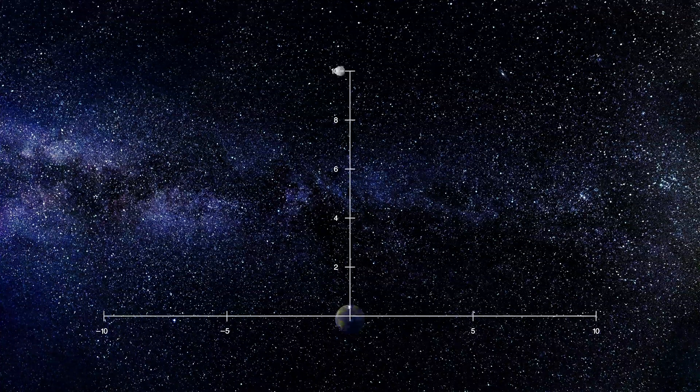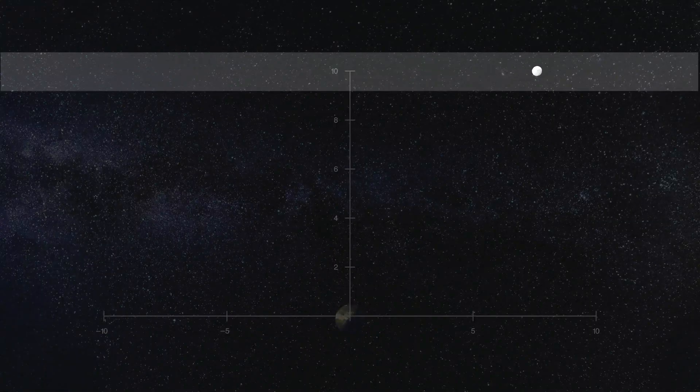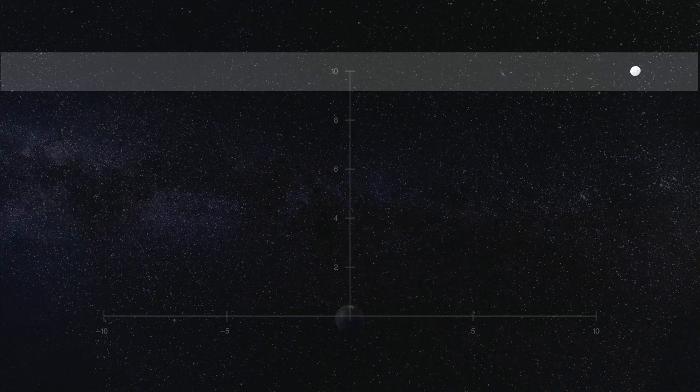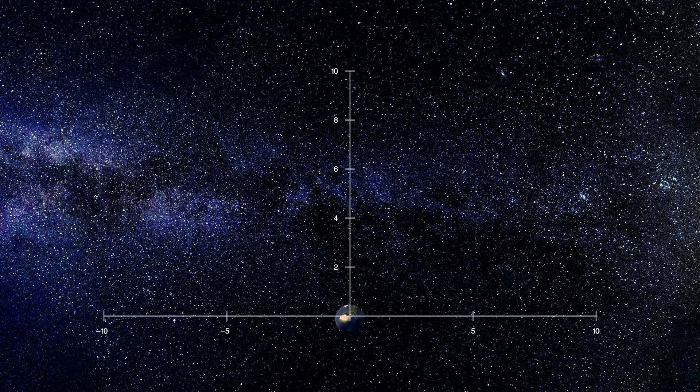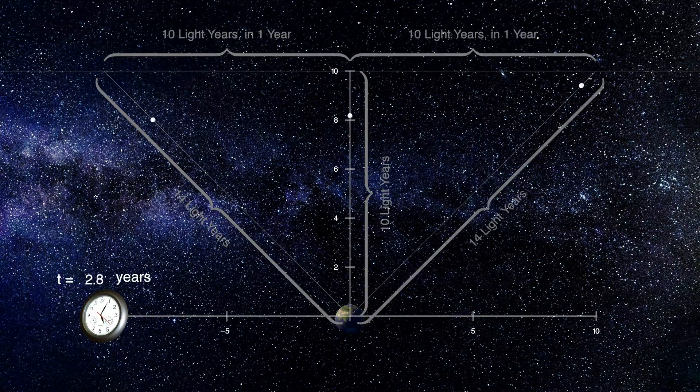We are asking this question only as a thought experiment. An object, a star perhaps, is moving from left to right at 10 times the speed of light, covering a distance of 20 light years in 2 years. The distance of closest approach to us is 10 light years. What would it look like to us?